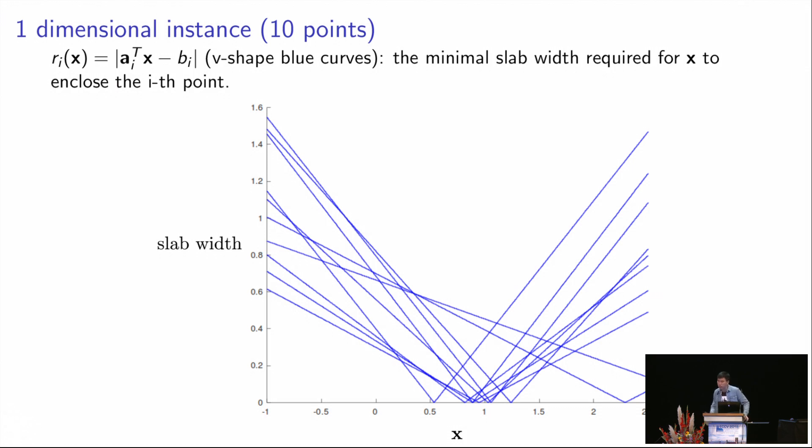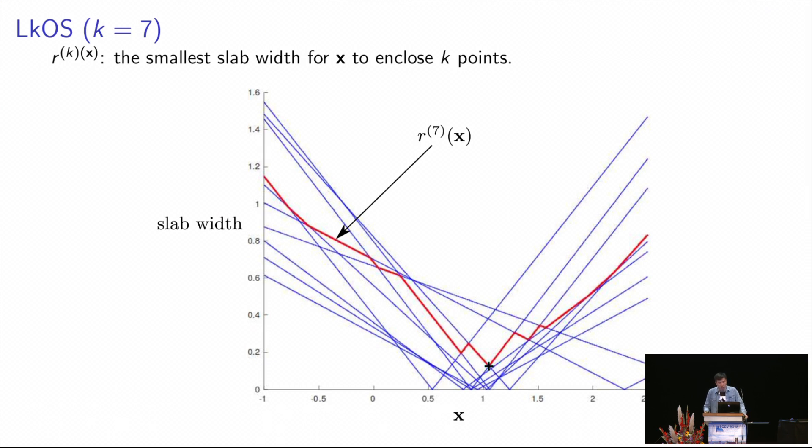So let's see a one-dimensional instance with 10 points. In this figure, each v-shaped curve is the minimal slab width required for a model on the x-axis to enclose the i-th point. I didn't render each point on the x-axis, but they are located on the x-axis. So for example, if we have k equals to 7 in the LKOS problem, that means we want to enclose seven of the points using the thinnest slab.